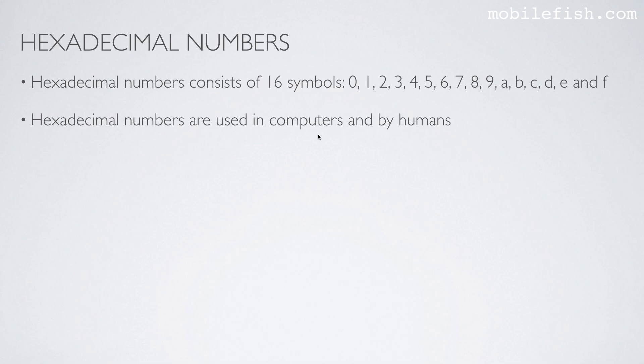What are hexadecimal numbers? Hexadecimal numbers consist of 16 symbols: 0, 1, 2, 3, 4, 5, 6, 7, 8, and 9, followed by A, B, C, D, E, and F. So a total 16. Hexadecimal numbers are used in computers and by humans, especially by software developers and scientists.